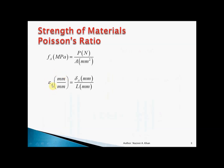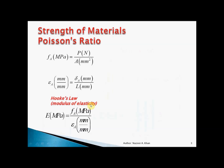Actual strain is the total deformation in the actual direction divided by the total length, giving deformation per millimeter — a fairly small number. You write it with units, though leaving them out is also acceptable. Hooke's Law: the modulus of elasticity E (in MPa) is the slope of the proportional part of a stress-strain curve — stress (rise) divided by strain (run).